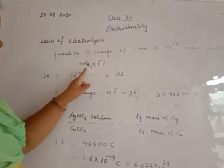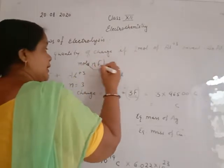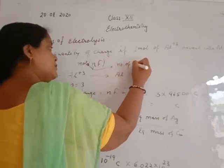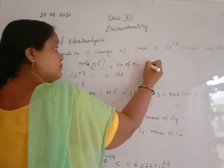In the formula Q = NF, N is the number of electrons involved and F is the Faraday constant.